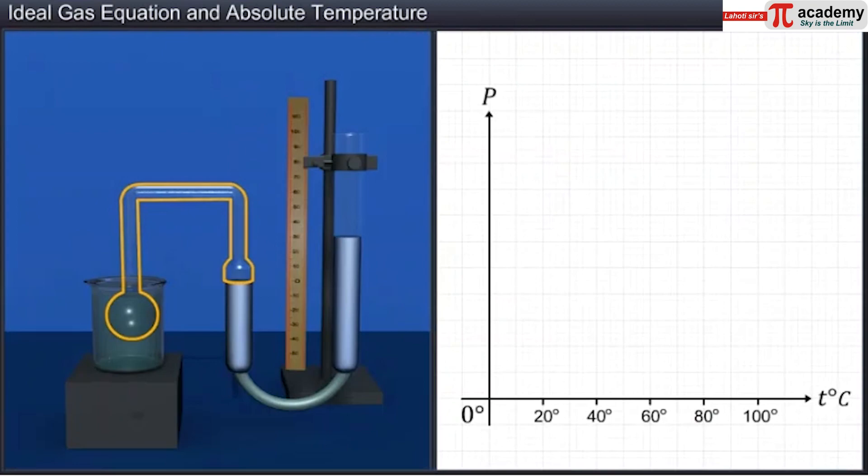When a graph is plotted between pressure and temperature, a straight line is obtained.